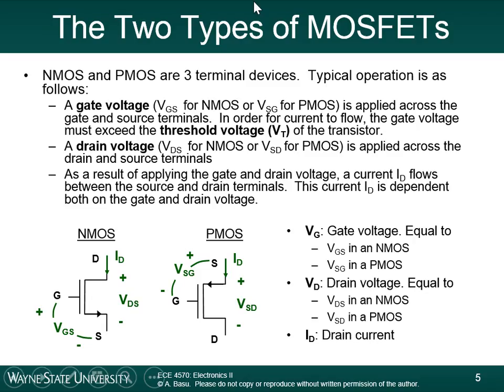Of the two types of transistors: the NMOS device turns on when you put a high positive gate voltage between the gate and the source — the device turns on and allows current flow between drain and source. The PMOS device is the opposite — you apply a negative gate voltage with respect to the source, which is why the source is placed at the top at a higher voltage. Instead of applying VGS to turn it on, you apply VSG. The gate to source voltage turns the device on and opens a connection between the drain and the source.